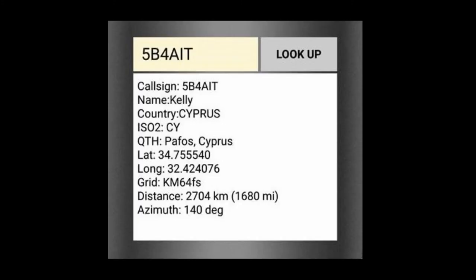The last-minute addition to the HamSphere 4 mobile software modules is the lookup module. You input the call sign — for example, 9 Hotel Sugar 4755 — press lookup, and the window will populate with call sign, name, country, ISO 2, QTH, latitude, longitude, grid, distance from your station, and the azimuth you need to use with your directional antenna.